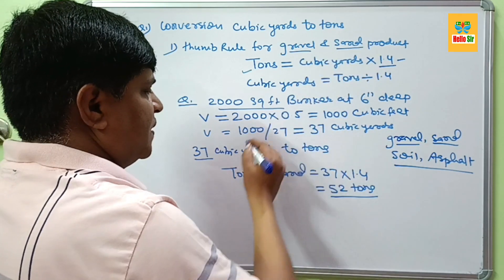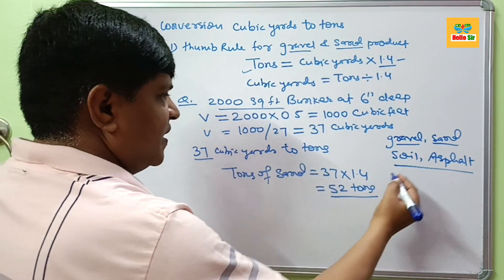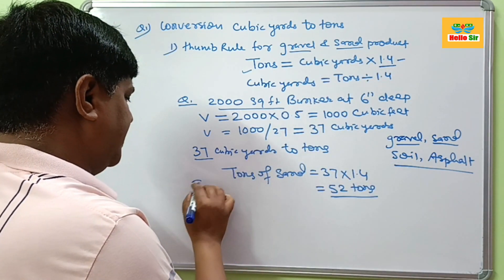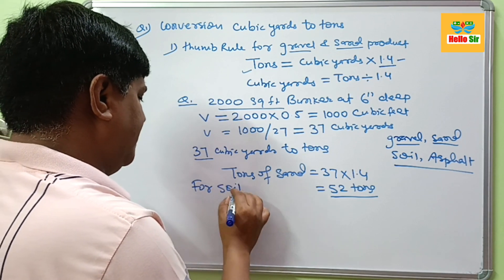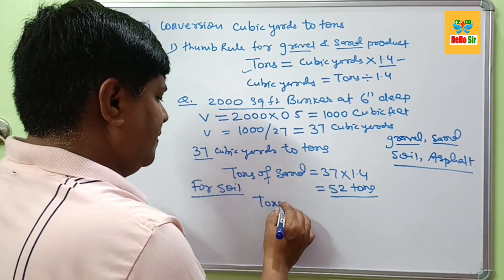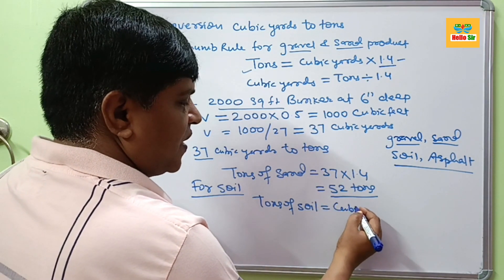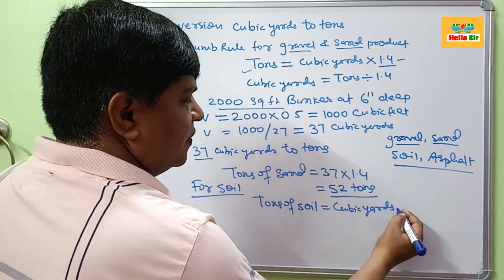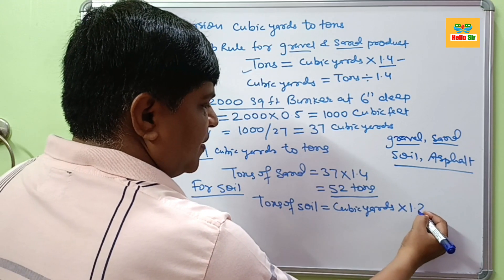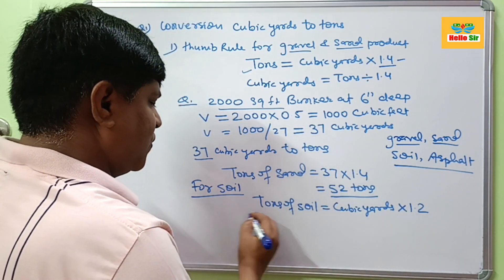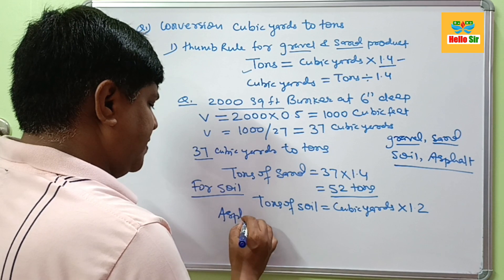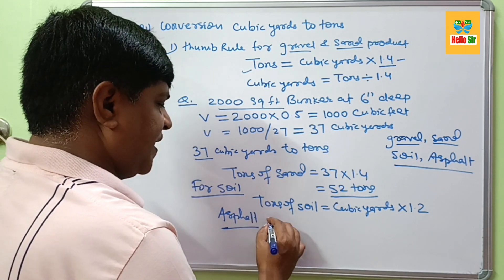And this conversion factor is only for sand and gravel product. And if your material is soil, for soil, remember this one. Tons of soil is equal to cubic yards of soil multiplied by 1.2.